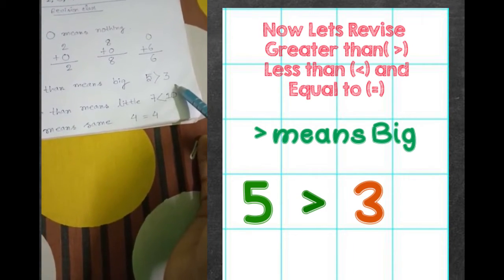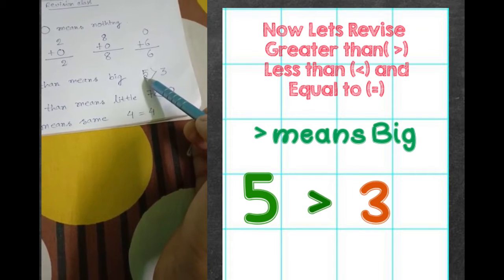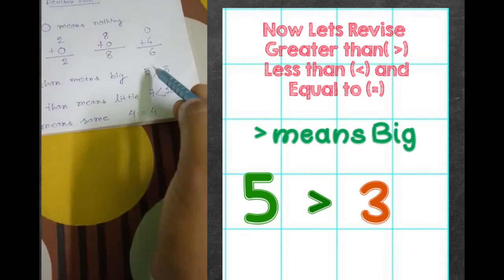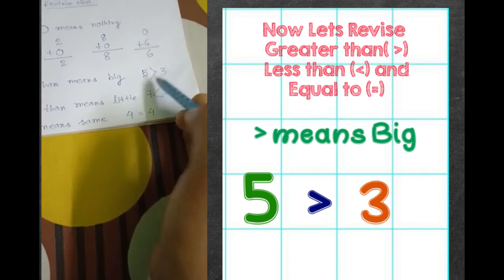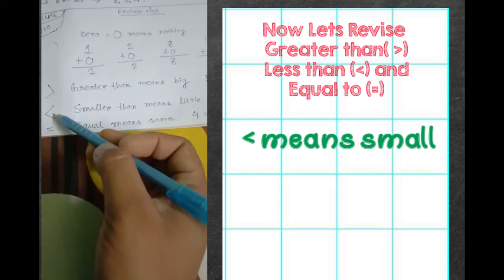So five and three, which is greater? Five is greater. So the greater than sign goes to five. Five is greater than three. Next, smaller than.